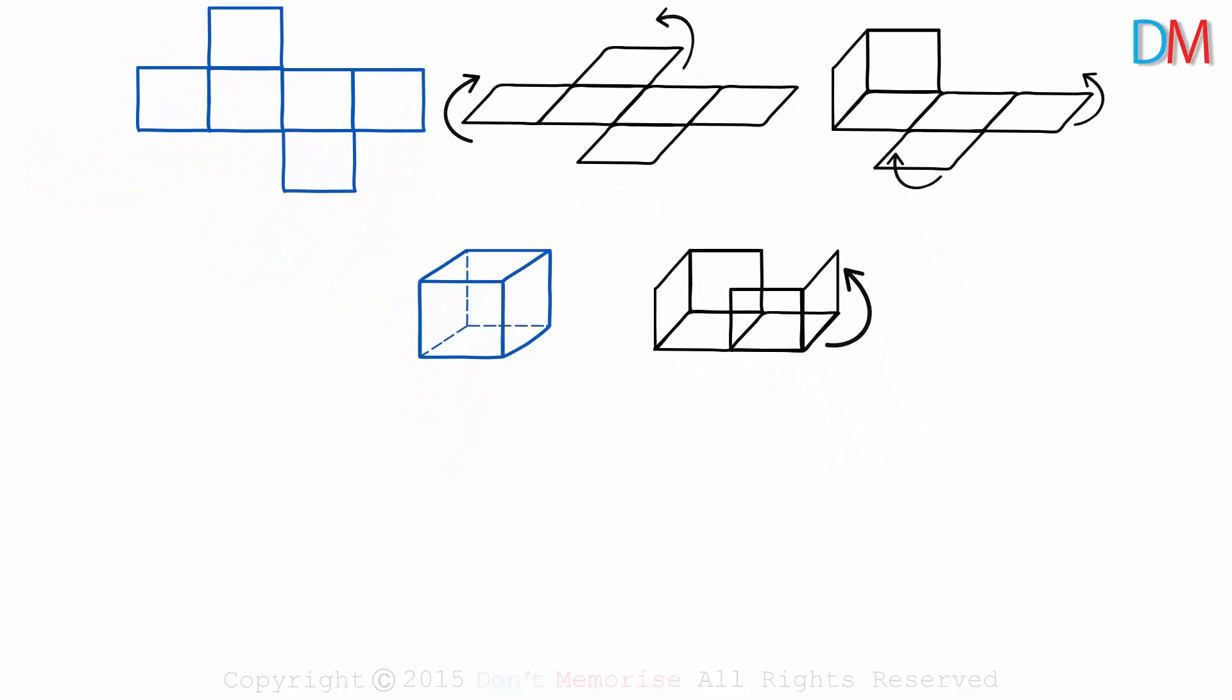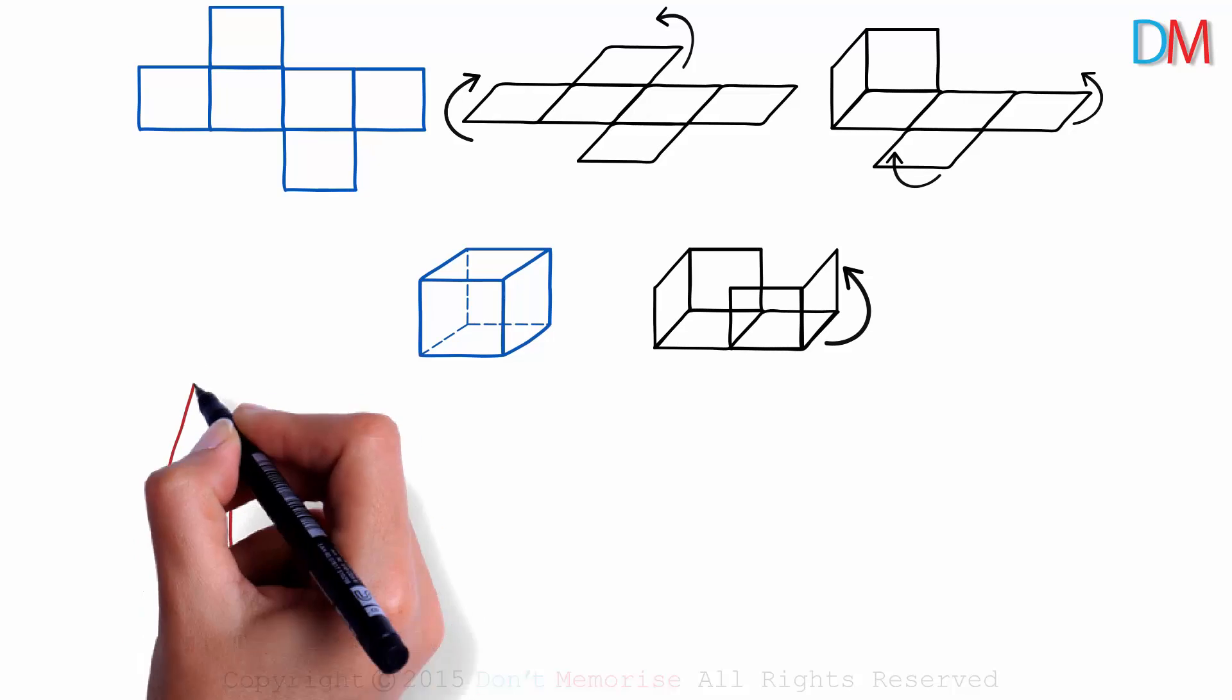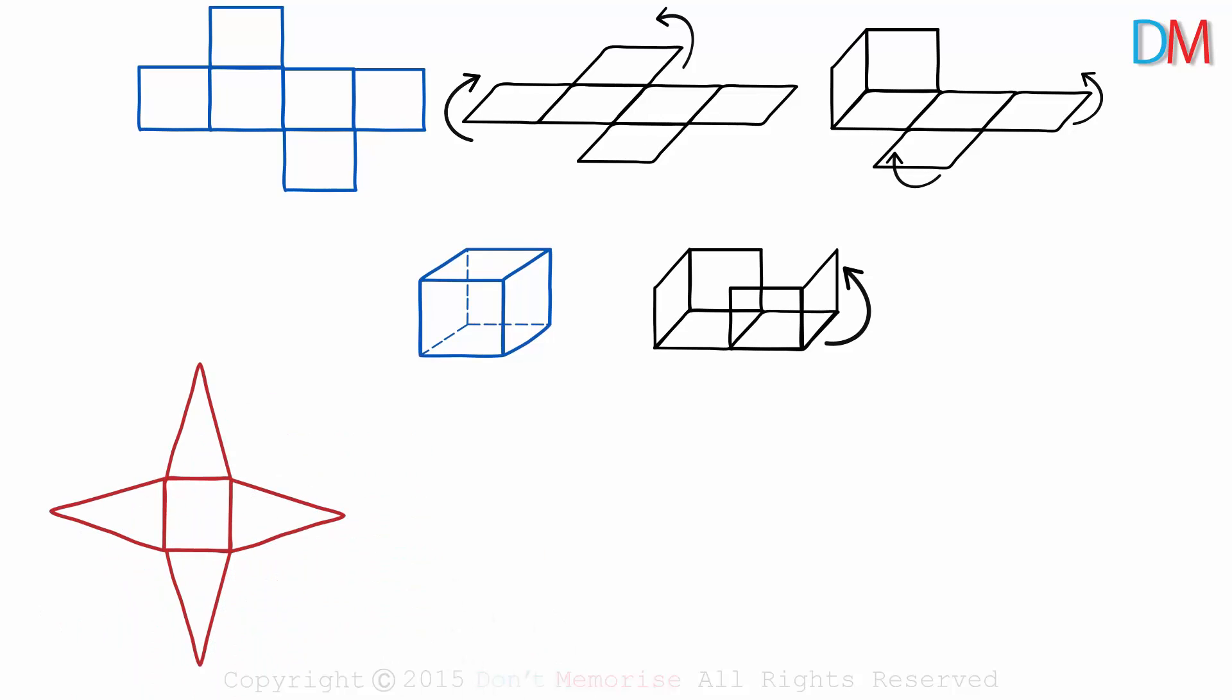Here's another simple example for you to try out. This is the net given to us. A square with four congruent isosceles triangles, each attached to one of its sides. What solid shape can we form out of it?